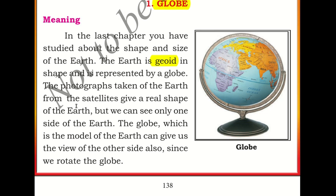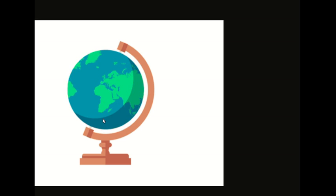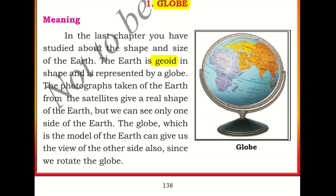The photographs taken of the earth from satellites give a real shape of the earth, but we can see only one side of the earth. The globe, which is the model of the earth, can give us the view of the other side as well since we can rotate it. In this photograph you can only see part of North America and South America, whereas with a globe you can see the different sides of the planet — that is one of the advantages of the globe over pictures.